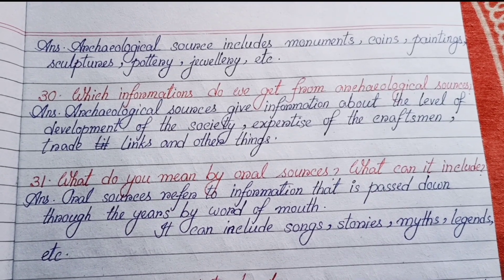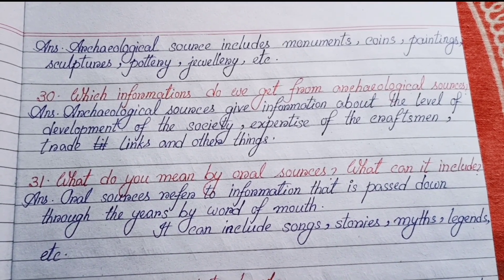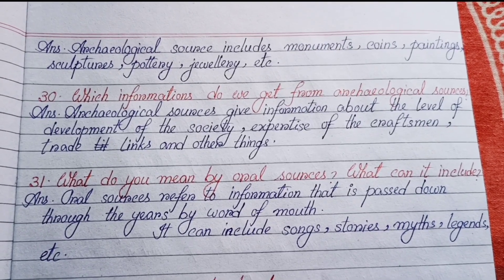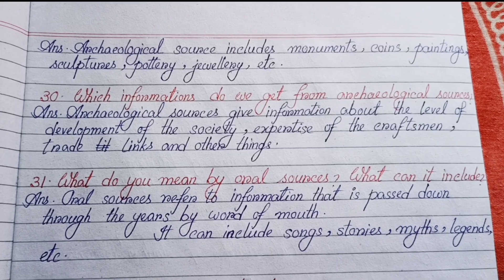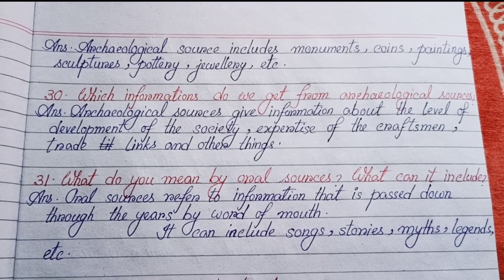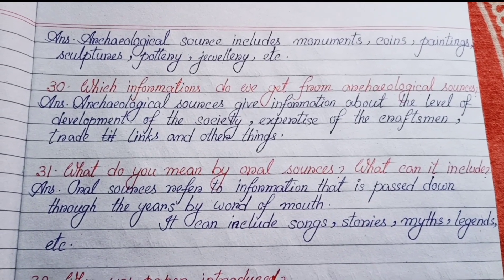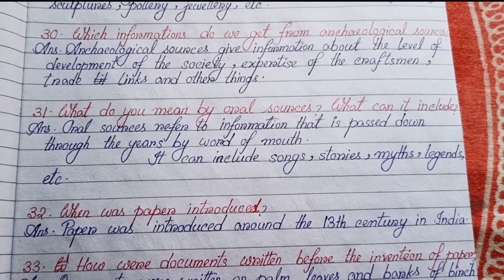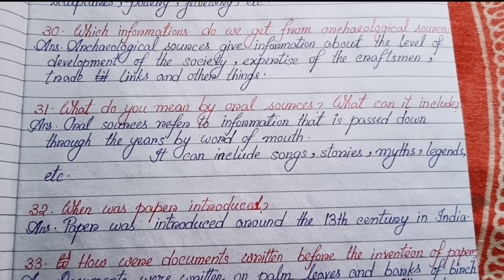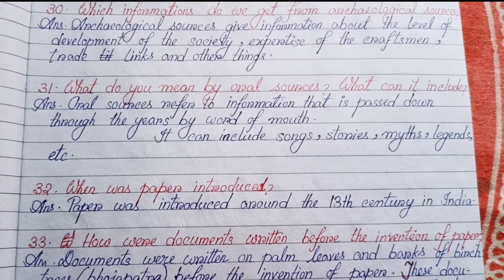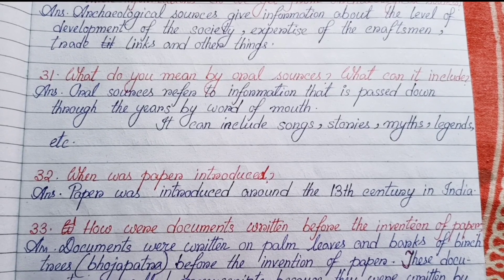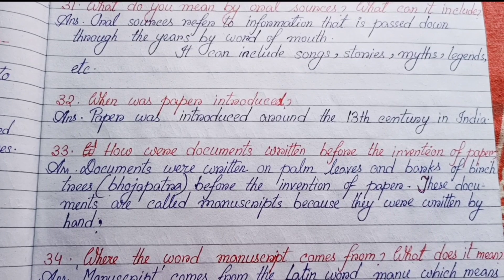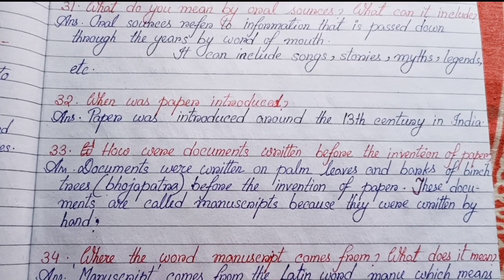Number twenty-nine: Which things are included in archaeological sources? Archaeological sources include monuments, coins, paintings, sculptures, pottery, jewelry, etc. Number thirty: Which information do we get from archaeological sources? Archaeological sources give information about the level of development of the society, the expertise of the craftsmen, trade links and other things. Number thirty-one: What do you mean by oral sources? Oral sources refer to information that is passed down through the years by word of mouth. It can include songs, stories, myths, legends, etc.